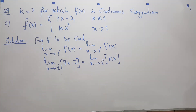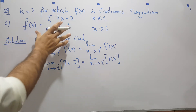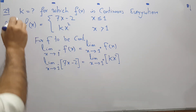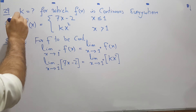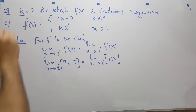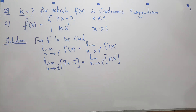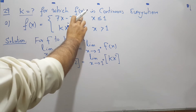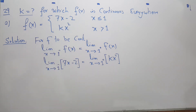Hello everyone. We are given a function f of x and they're asking you to find out the value of k from this function for which f of x is continuous everywhere.